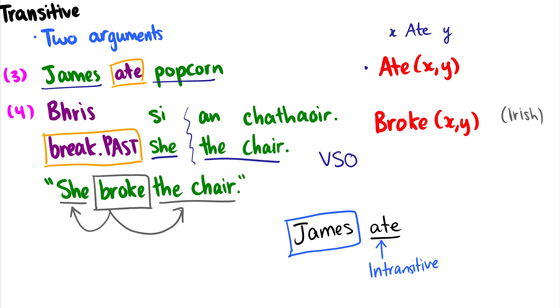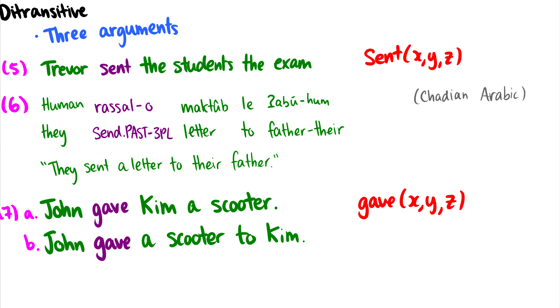Now there's a third class of verbs: ditransitive verbs, and these have three arguments. Here's a good example. In number five, 'Trevor sent the students the exam.' So 'sent' takes three arguments. The first argument is Trevor, so it is someone doing the sending. The second argument is 'the students,' and 'the exam' is another argument. When you send something, someone sends something to someone. So Trevor is sending the exam to the students.